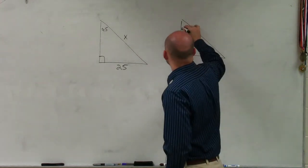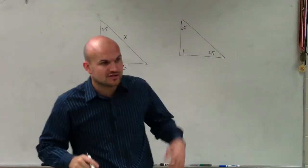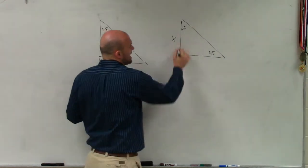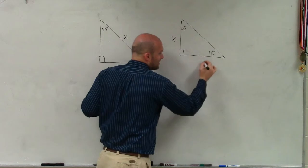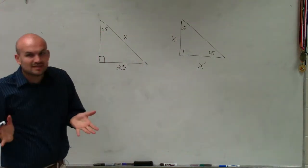So on the 45-45-90 triangle, there's something important that we need to understand again, is the relationship. The side lengths are related to one another. If this is x, if one leg is x, then the other leg has to be x as well. The legs are exactly the same.